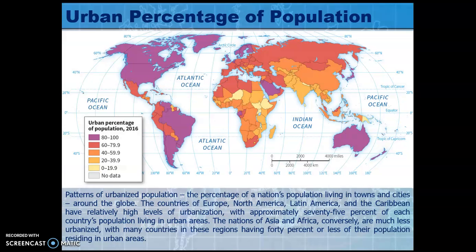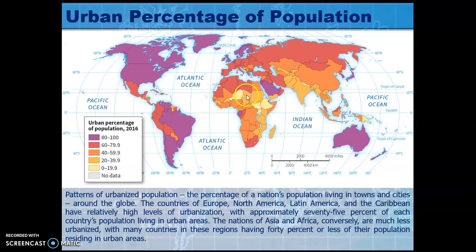When we look at population as a percent urban, we certainly see it high in the Western Hemisphere. Canada, the United States, Brazil, Chile, Argentina, and Venezuela are all 80% or above. But once you start looking at places like Africa — Niger, South Sudan, Uganda, Eritrea, Nepal — all of these are quite low, as is Papua New Guinea.